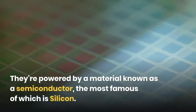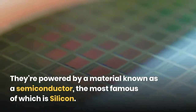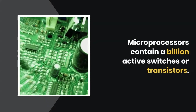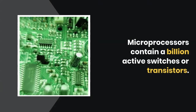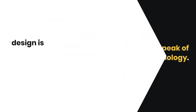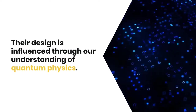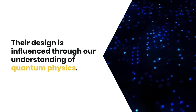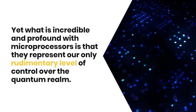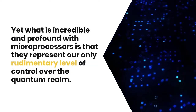They're powered by a material known as a semiconductor, the most famous of which is silicon. Microprocessors contain a billion active switches or transistors. This is the peak of modern technology. Their design is influenced through our understanding of quantum physics. Yet what is incredible and profound with microprocessors is that they represent our only rudimentary level of control over the quantum realm.